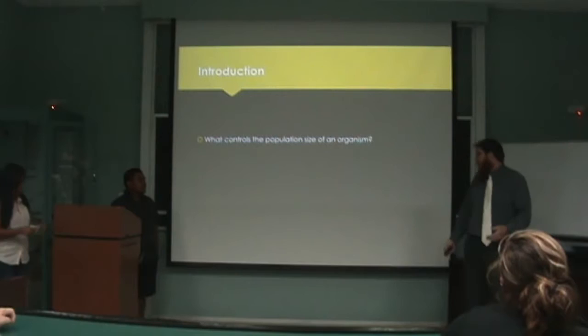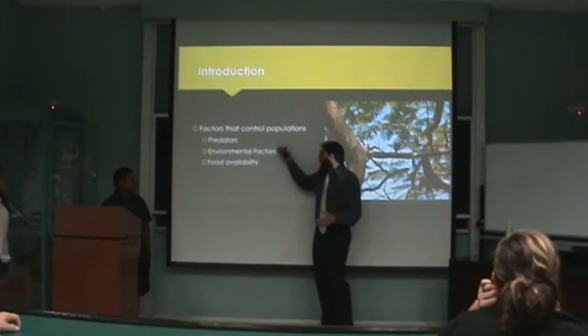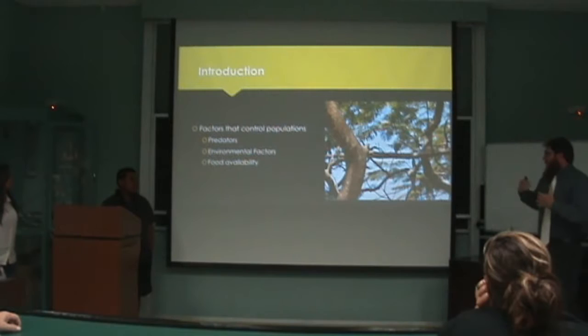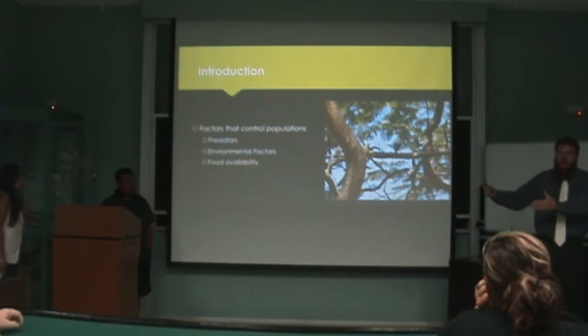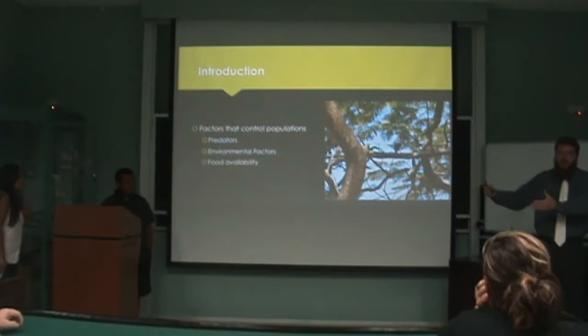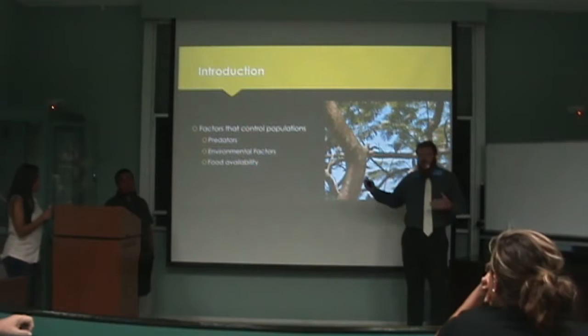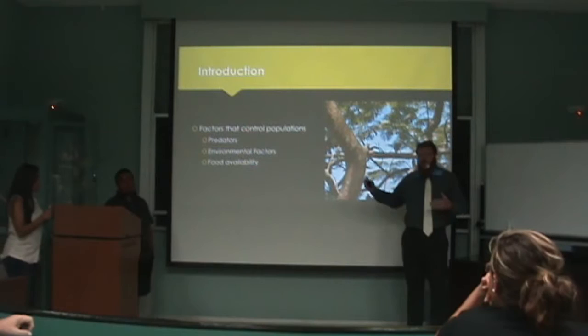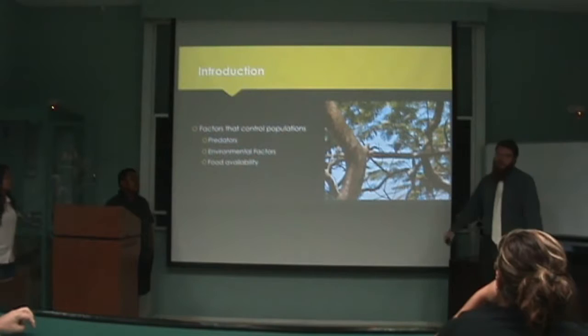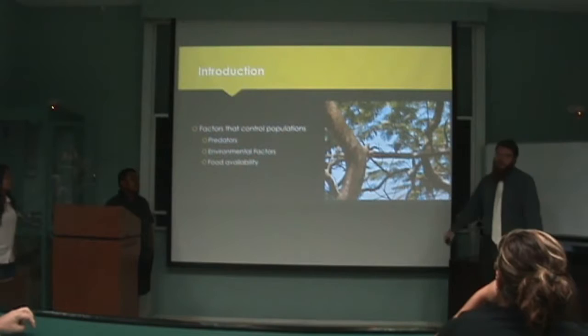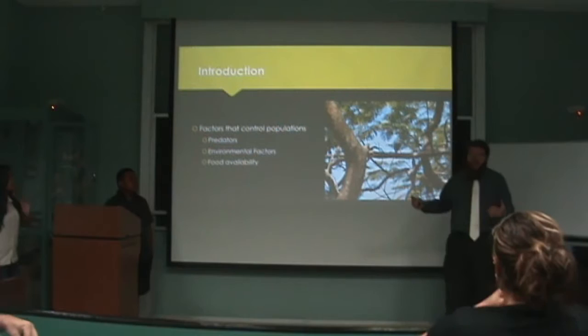We started to discuss the things that go into that — what can control population sizes? We decided there were three things we wanted to look at: predators, environmental factors, and food availability. With any given organism, if there's more predators, you're going to have less prey. Environmental factors can be canopy cover, stuff on the ground — a whole assortment of abiotic factors. And food availability: if there's more food an animal likes to eat, there's going to be more of that population; if there's less, there's going to be less.